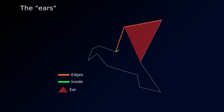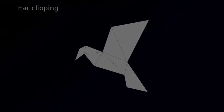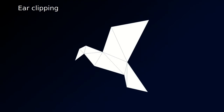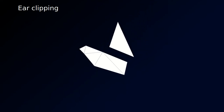Any simple polygon with at least four vertices can be broken down into at least two ears. An ear of a polygon is a triangle with two sides being edges of the polygon and the third one being inside the polygon. The ear clipping algorithm consists of searching for an ear and cutting it off from the current polygon, repeating until there is only one triangle left.